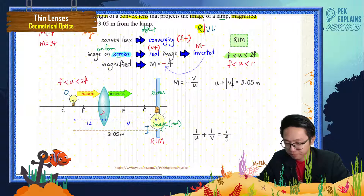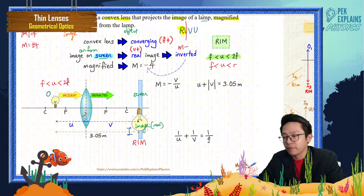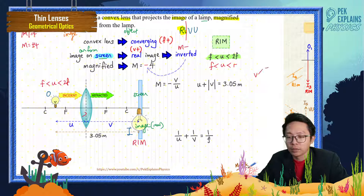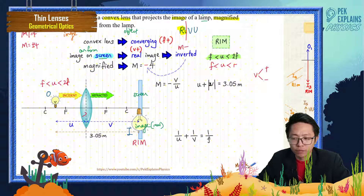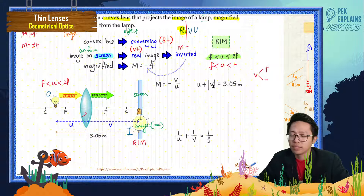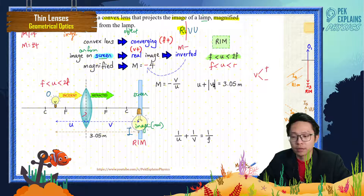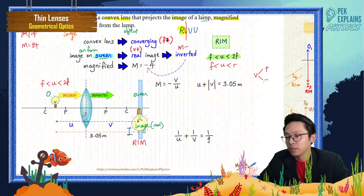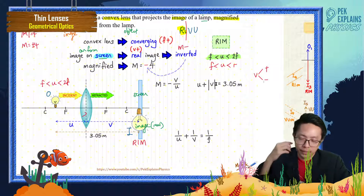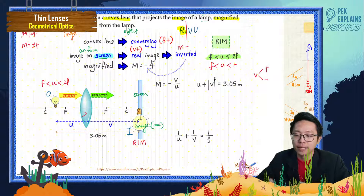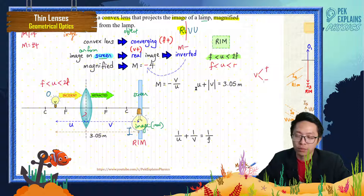Why do I write |v| with modulus? Because sometimes v can be negative, and we need to make sure v is positive before adding it to u to get the total distance of 3.05 meters. In this case v is positive, but using modulus keeps us safe. If v were negative, it would automatically become positive.